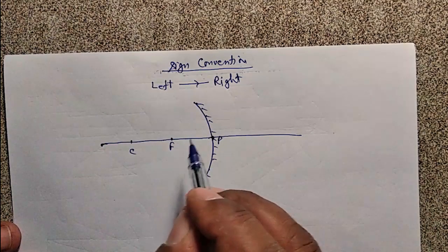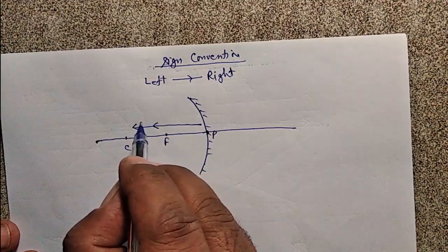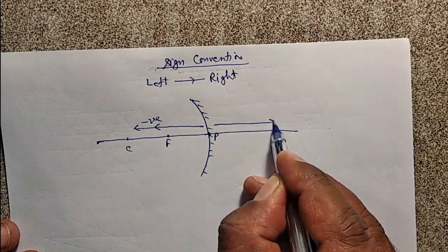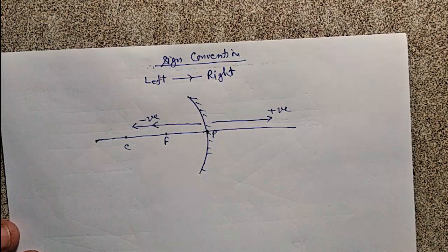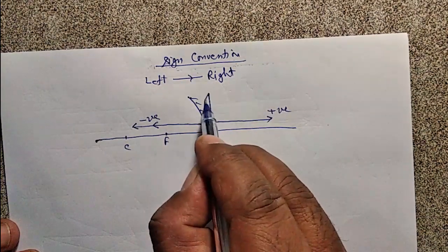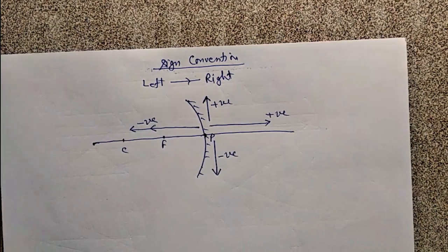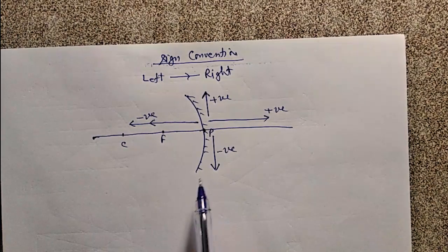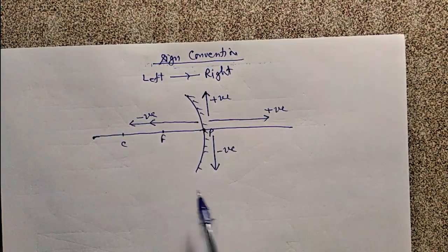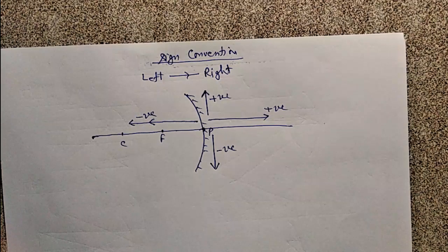Third rule: distances measured in the opposite direction to the incident ray are always negative. Distances measured in the direction of the incident ray are taken as positive. Distances in the upward direction are positive and in the downward direction are negative. For a concave mirror, focal length is always negative, and for a convex mirror, focal length is positive. This is the sign convention to keep in mind when solving numericals.